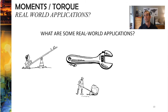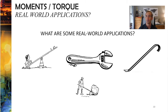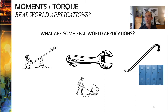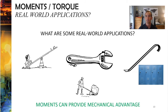Another good example is a lever — that's what allows people to lift things that are really heavy. It was used by the Egyptians to build the Great Pyramids of Giza. A very common lever is the crowbar. At the end of the day, one of the biggest advantages of understanding moments is that it allows you to provide mechanical advantage, magnify your output. Moments are a very powerful concept that allow you to do impressive things in the real world.